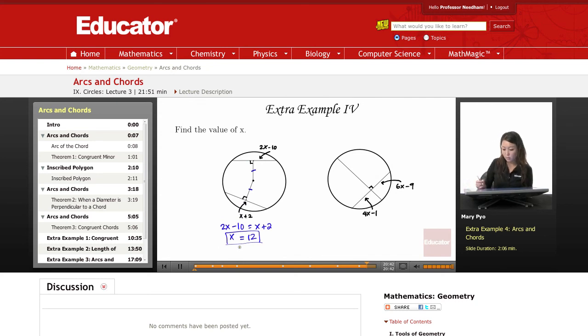And then the next one, here, this is the diameter because it's passing through the center, and that's the center right there. And it's perpendicular to this cord. So then I know that this cord and this cord are congruent, or I'm sorry, this segment and this segment are congruent. The cord is bisected. So then 4x minus 1 is going to be equal to 6x minus 9.